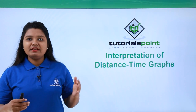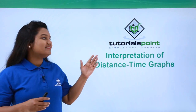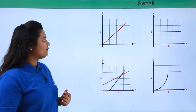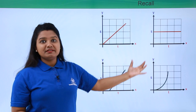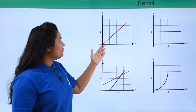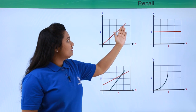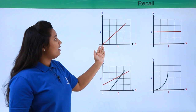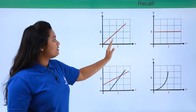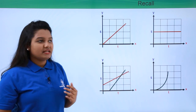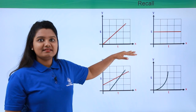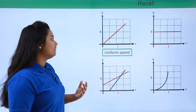Hello everyone. In this video we'll be trying to interpret a few distance-time graphs. Before that, let's recall what we have learned in the previous video. These are the graphs we have already seen. The first graph is a straight line which represents uniform motion, since the body travels equal distances in equal intervals of time. This straight line is inclined to the x-axis and represents a body moving with uniform speed.